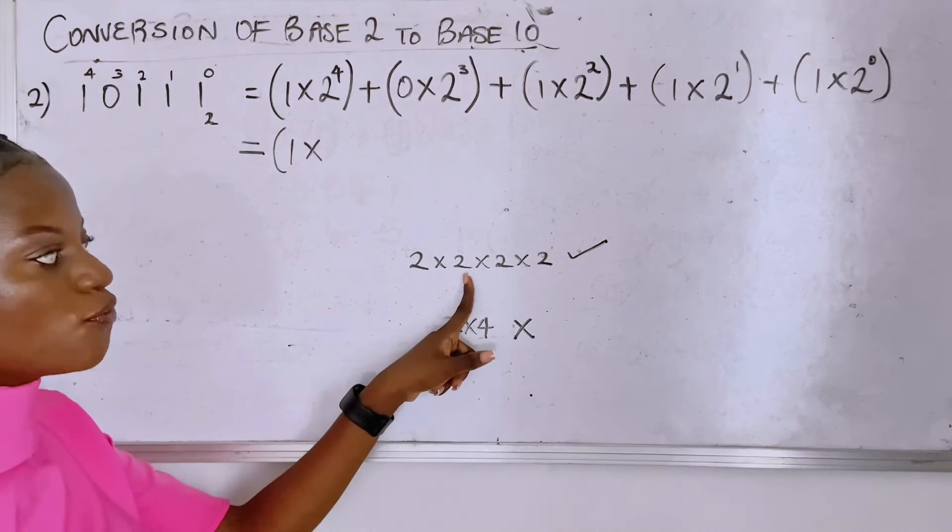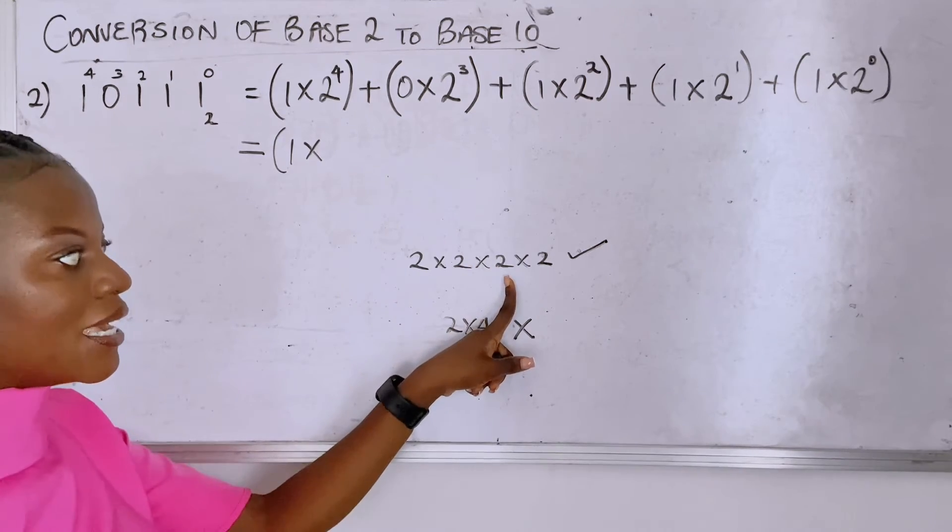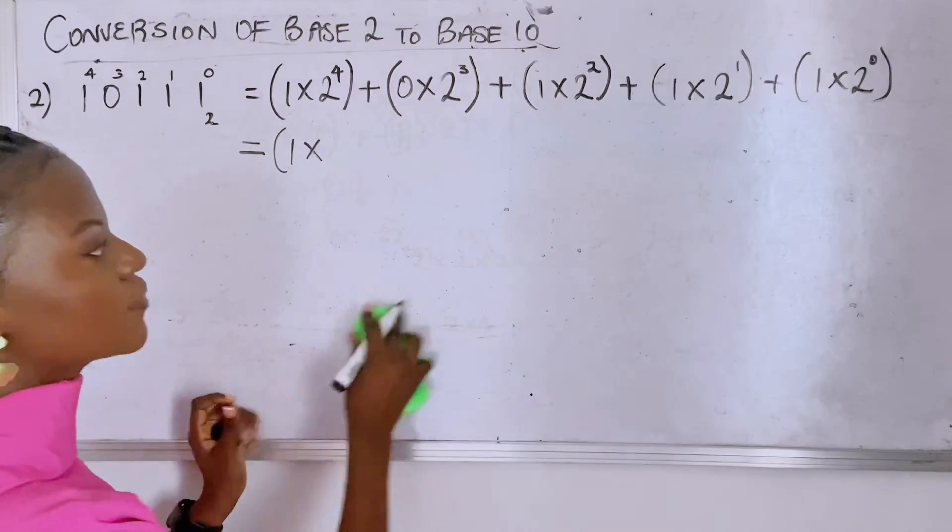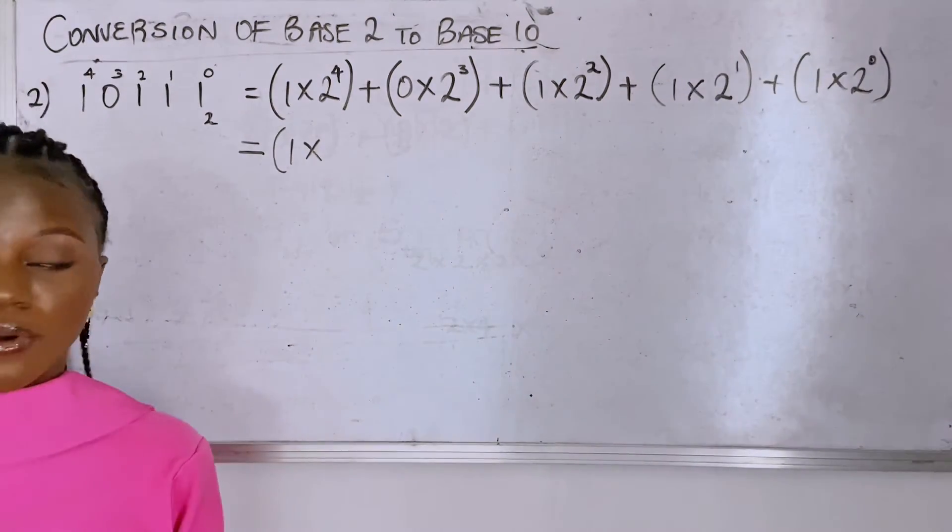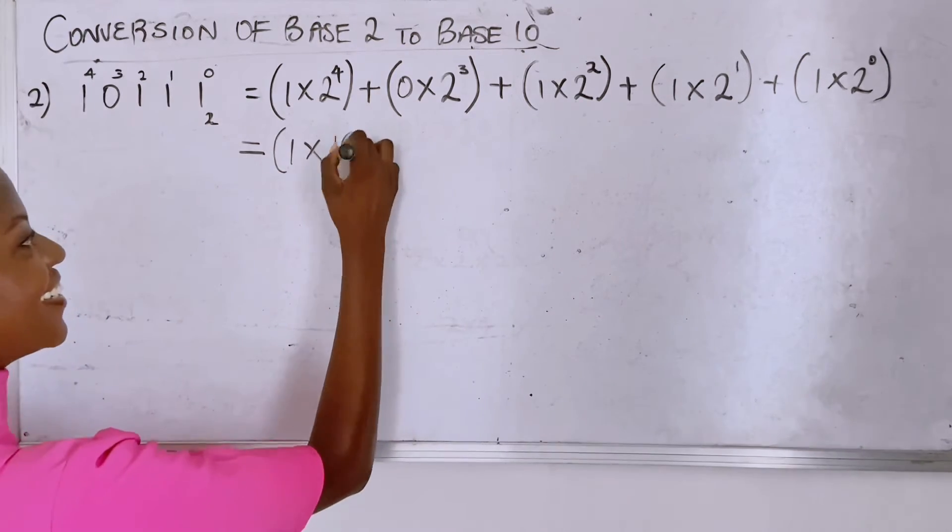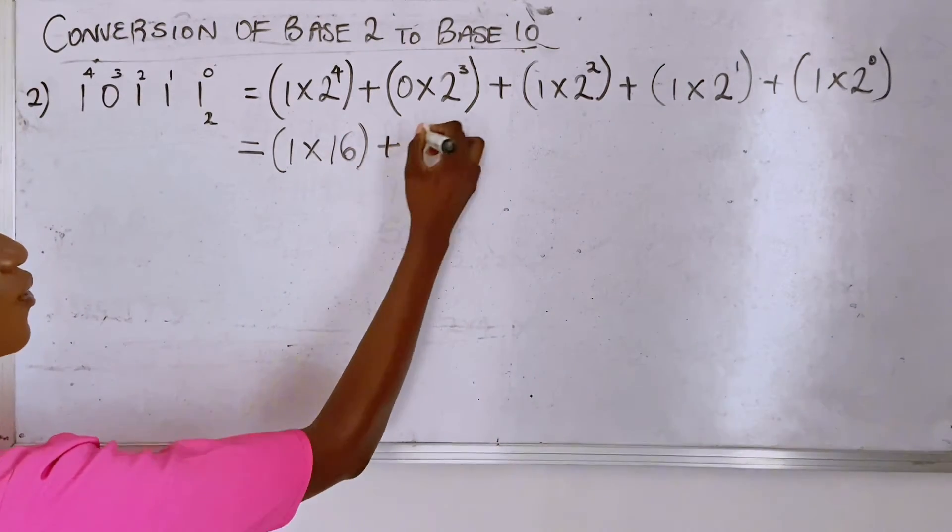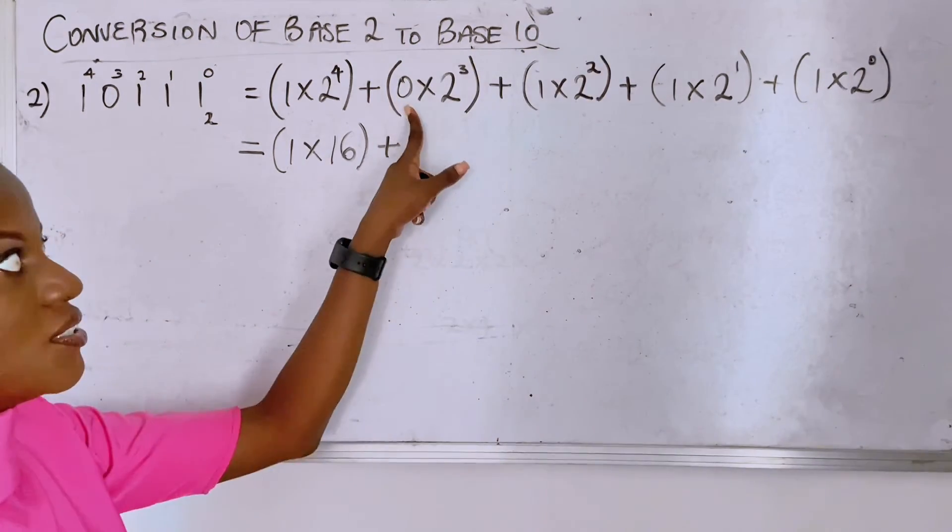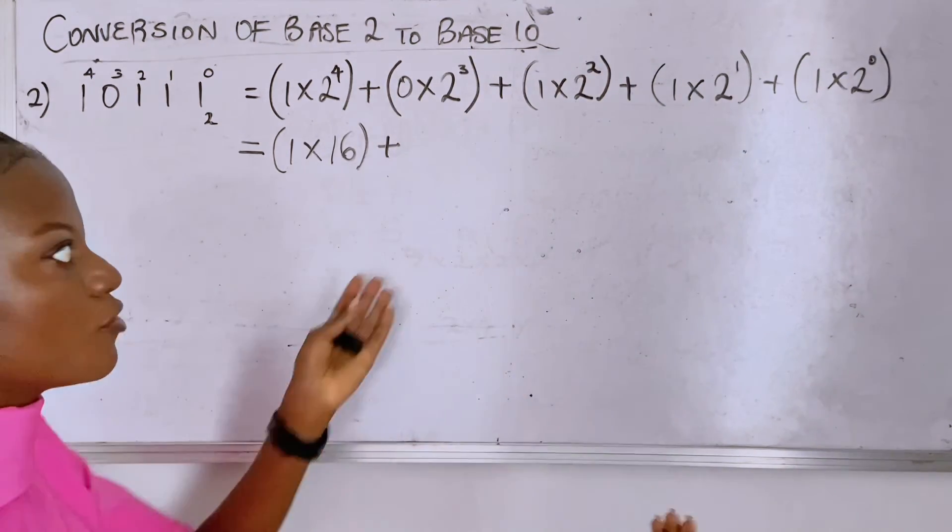So you have two times two which is four, four times two is eight, eight times two is sixteen. Are we good? Okay, so two raised to the power of four - so you don't keep using your calculator, know it - this is 16. Plus, now what I always do is I cancel out the zeros. Whenever you see zero multiplying anything it's zero.